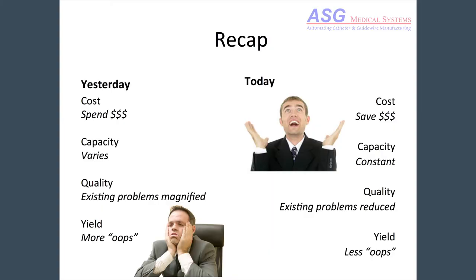To recap: yesterday you had to spend more money on labor and machinery to get more capacity. That capacity varied depending on the skill and attitude of the people doing the processing. Quality varied from shift to shift and day to day. Yield was never 100% and it varied. The causes of yield loss changed from day to day, making them hard to control. In factories without enough automation, the Pareto of problems changes from week to week, making it very difficult to identify and eliminate a root cause. When machines are running, they do have problems, but those problems tend to be consistent and can be solved with Pareto analysis.